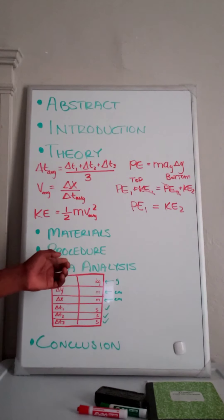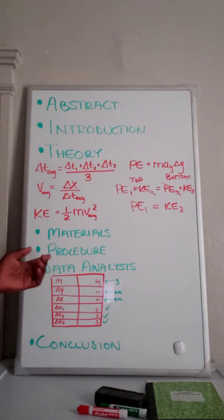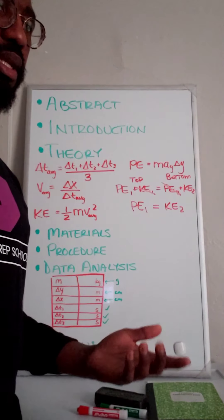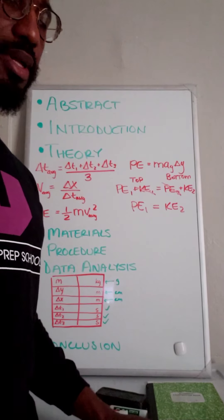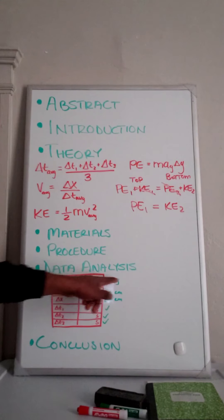Then we have the procedure section. You're just going to simply write down everything in the procedure. There is actually a posted document on Google Classrooms that goes through the procedure. Just take that, shorten it a bit, and that's going to go in your lab.